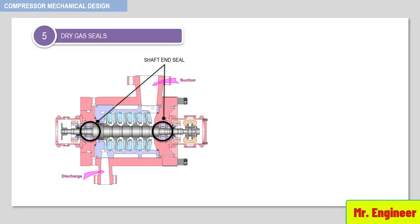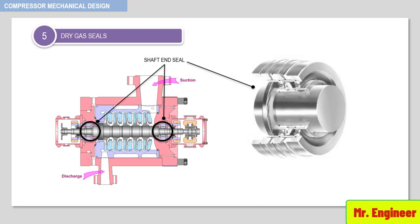Older seal designs extensively used labyrinth or maintenance-intensive oil seals. But with all its advantages, today the preferred choice in the industry is the dry-running gas-lubricated seal. The design of a gas-lubricated mechanical seal, mostly in the form of a cartridge as depicted here, is very much similar to the conventional mechanical seal.